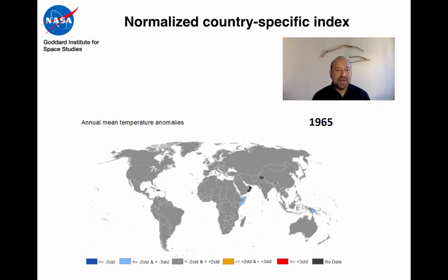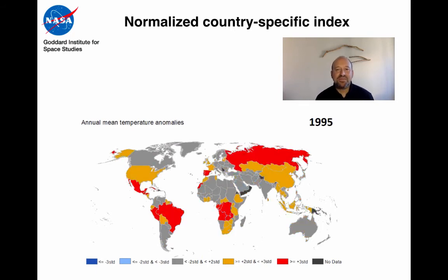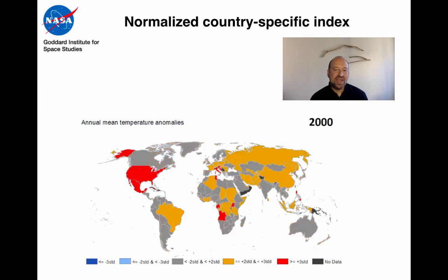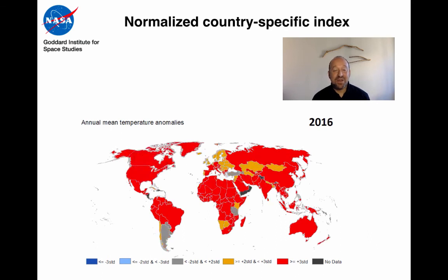If you put it on a normalised basis — so you're looking at the standard deviations from the normal period 1951 to 1980 — you can see that in most areas you don't see three standard deviation anomalies very often, particularly in the earlier part of the 20th century. But as you get towards the end of the 20th century, what you're seeing are statistically very unlikely but physically very plausible three standard deviation departures. And particularly in 2016, which was the warmest year on record, we're seeing three standard deviation departures from the norm on a pretty widespread basis.